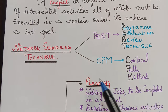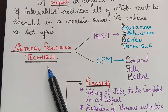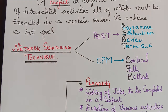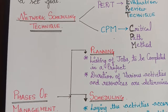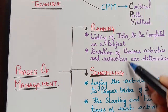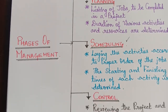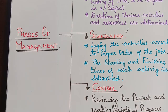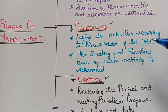There are three phases of management in a network scheduling technique: Planning, Scheduling, and Control. Let us see them one by one.